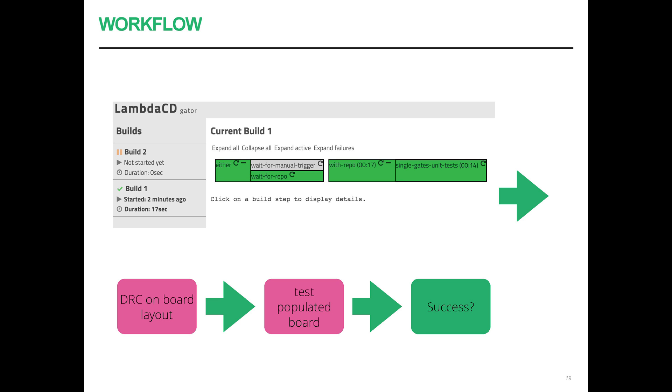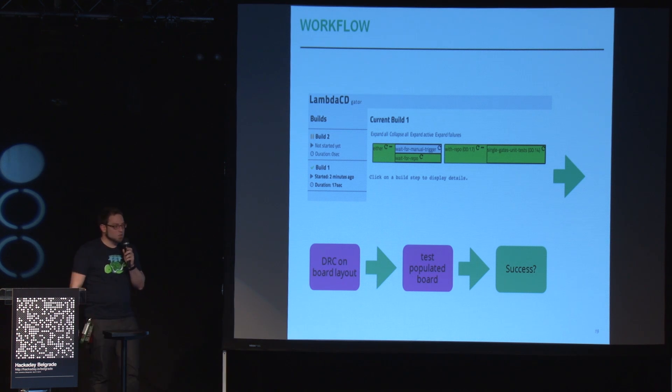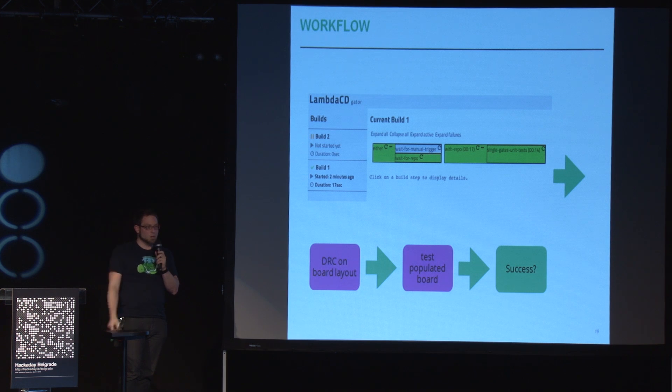One nice thing about this is that all of it can be automated. I use a continuous integration server — fairly common in the software development world — and whenever I commit something to my Git repository, it automatically runs tests, replaces the gates, runs tests again, runs an electrical rule check, and so on. If I made a mistake, I get a red message saying "hey, you broke something." So basically I work on my board, commit to Git, and get either a green light or a red light. If I do something wrong, it tells me: "this XOR output is wrong — fix that."